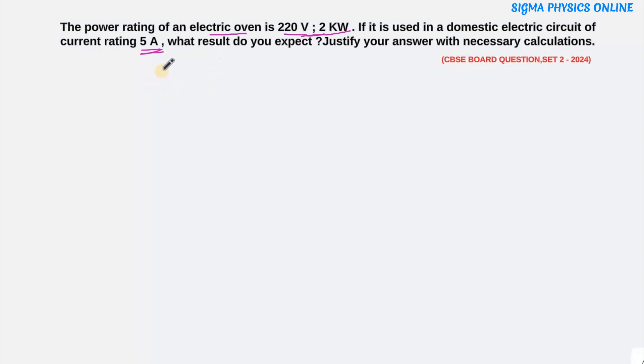Alright, so let's write down first what all are given. The power rating is given as 2 kilowatt which is 2000 watt. Then the voltage at which the oven is operating is 220 volt.